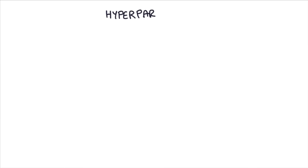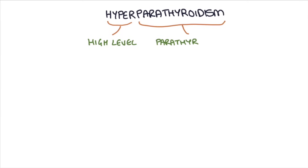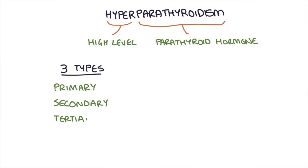Hi, this is Tom from ZeroToFinals.com. In this video I'm going to go through hyperparathyroidism. By definition, hyperparathyroidism is a high level of parathyroid hormone. And there's three types: primary, secondary, and tertiary. It's these three types that causes a lot of confusion amongst medical students and doctors, and it's the reason I wanted to make this video — just to clarify what the different causes are.